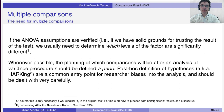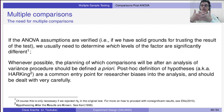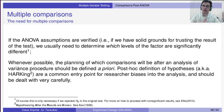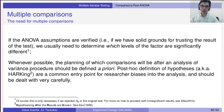If the ANOVA assumptions are verified, we then need to find which level(s) showed the significance that ANOVA indicated. There are different ways: comparing all levels against each other, comparing all levels against a standard value, or comparing one proposed new method against all others to see which perform better or worse. Importantly, this decision must be made at the design stage — before collecting data.